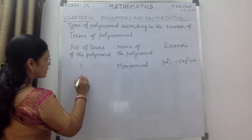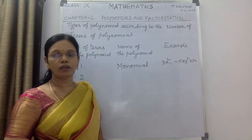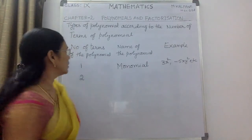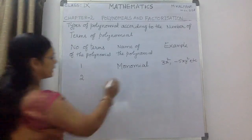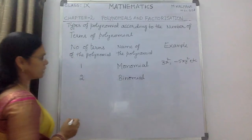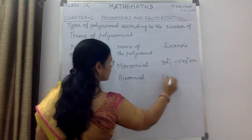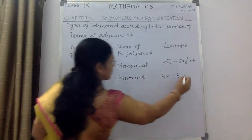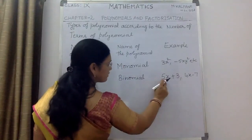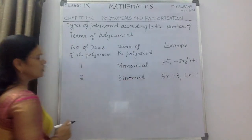If the number of terms of the polynomial is 2, you can name that particular polynomial a binomial. Examples: 5x + 3 and 4x - 7. Each of these has two terms — 5x and 3, or 4x and 7. Bi means 2, so this polynomial can be represented as a binomial.